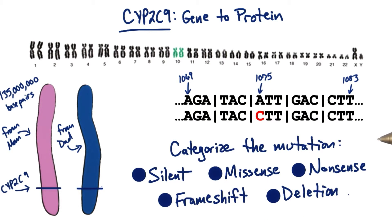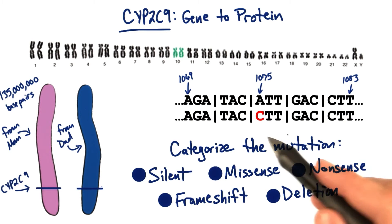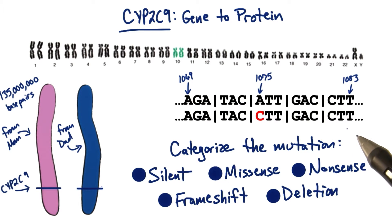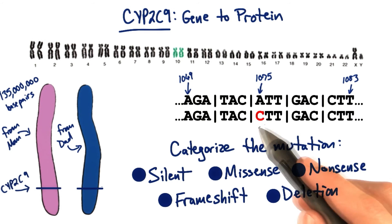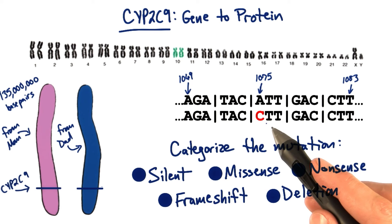Now, using the genetic code we learned about in Lesson 3, which you can find in the instructor's notes on this page, I want you to determine the change expected in the amino acid sequence, and then select the type of mutation that best categorizes the cytosine allele.